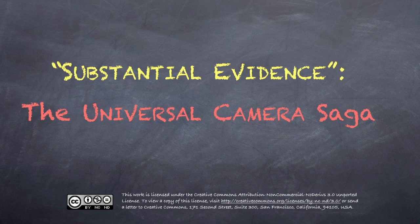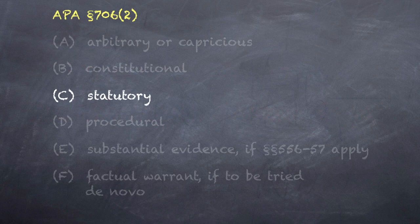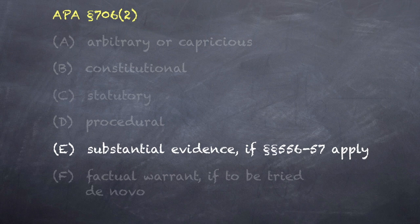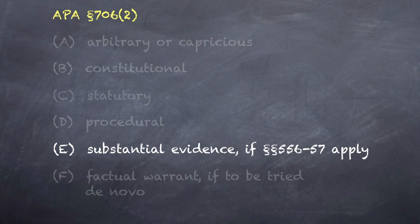Having covered the arbitrary or capricious standard and the Chevron doctrine, we turn now to the substantial evidence standard of review. By the terms of the APA, this substantial evidence standard applies only where certain formal procedures are required of the agency. Where it applies, it is often said to take the place of the arbitrary or capricious standard, and is generally believed to be more exacting of the agency. An action that lacked substantial evidence would of course also be arbitrary and capricious.